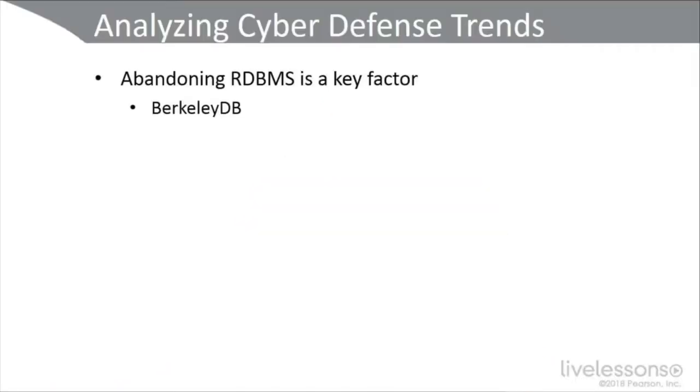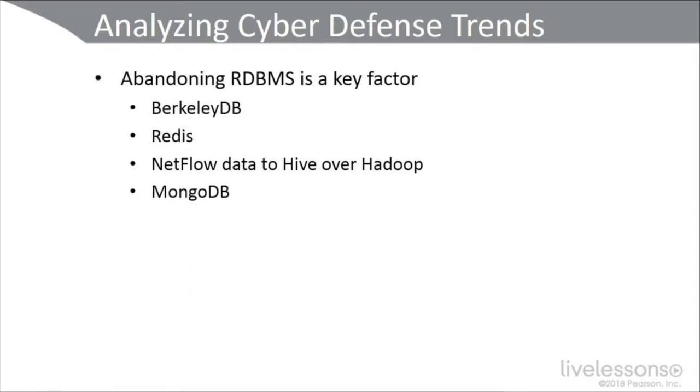One of the trends you're going to notice when you go to these sites is abandoning traditional relational database management systems like MySQL, SQL, NoSQL, and others, and moving towards tools that can be better analyzed using big data, big query, and machine learning. So moving towards unstructured, large database solutions like Berkeley DB, Redis, sending NetFlow version 9 data to Hive over Hadoop, and using MongoDB. When you go to these different vendor sites, you're going to notice that this is an underlying trend moving forward.